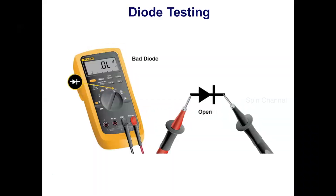If the OL display occurs with both the forward as well as the reverse conditions, then the diode is a defective diode — it is a bad diode, not a good one.